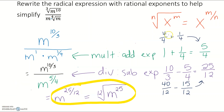If you aren't using a calculator: 1 plus 1/4 — 1 is 4/4, so 4/4 plus 1/4 gives 5/4. For 10/3 minus 5/4, the common denominator for 3 and 4 is 12, so 10/3 becomes 40/12 and 5/4 becomes 15/12. Subtracting the numerators: 40 minus 15 gives us 25, so that's how we get 25/12 as our final fraction.